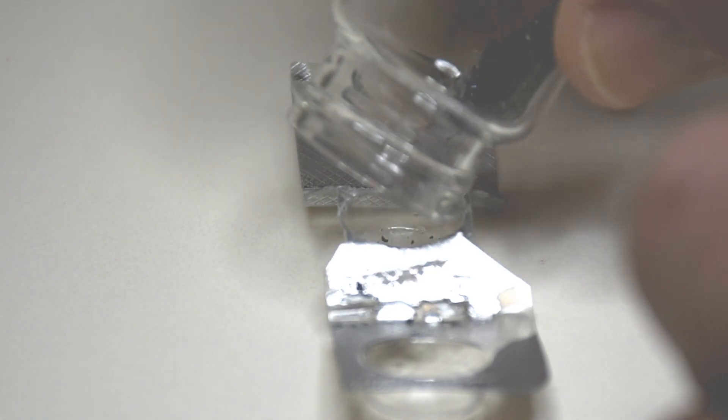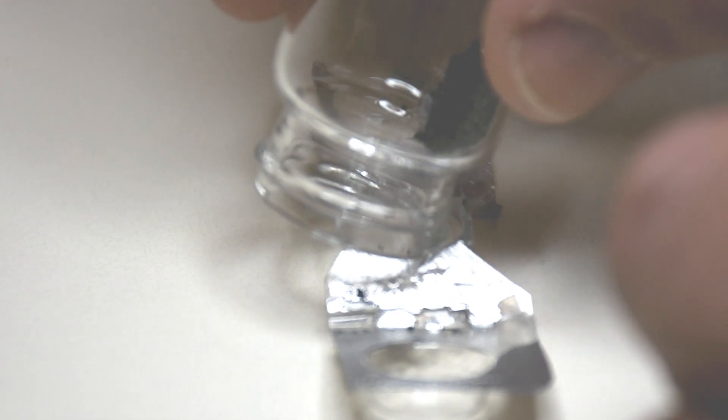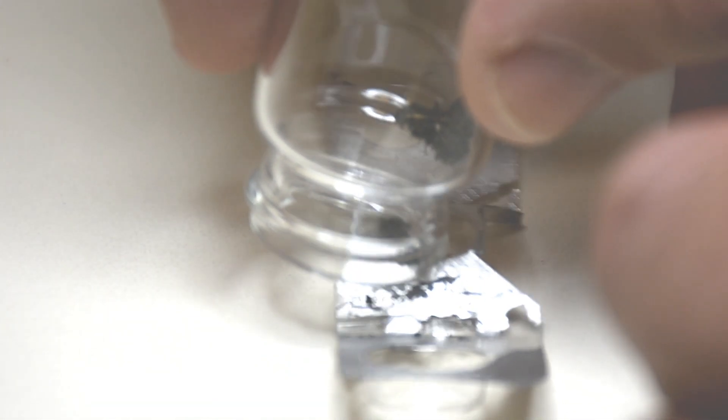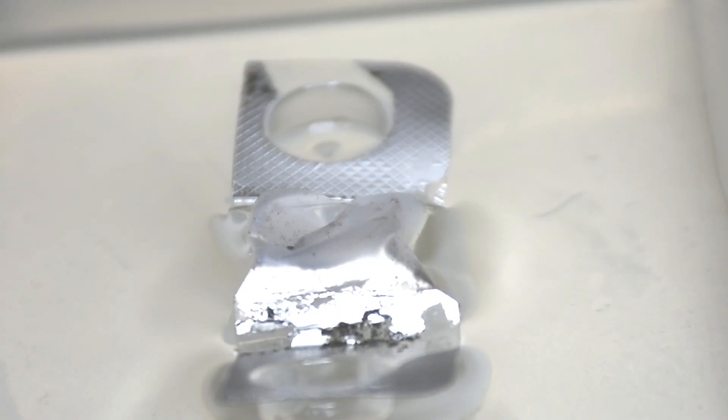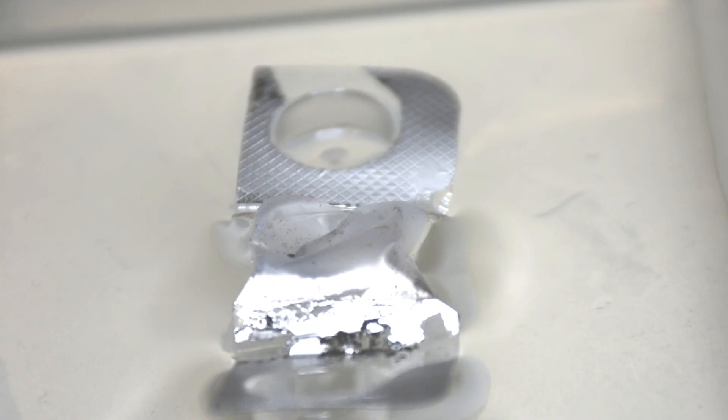Diamagnetism and paramagnetism are very weak compared to ferromagnetic materials. If we fill our boat with iron filings and put it on the water, the attraction is much, much, much stronger. And the boat flies onto the magnet.